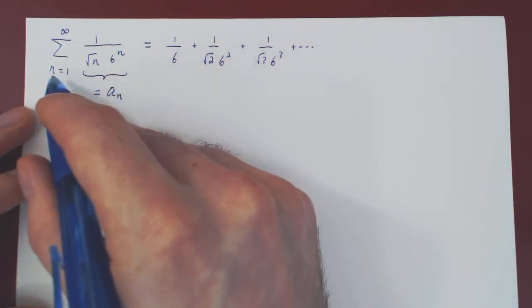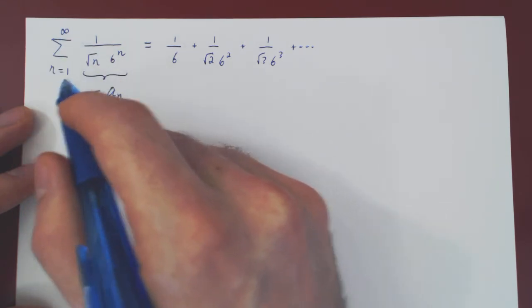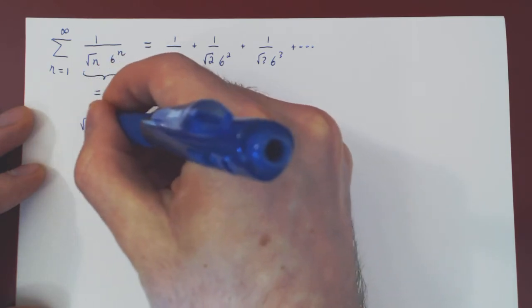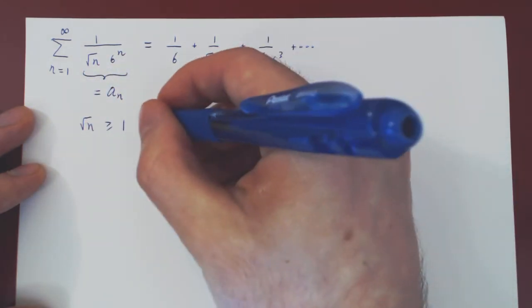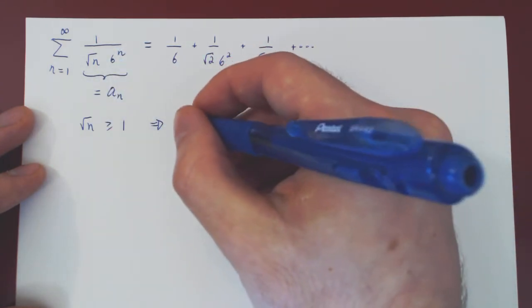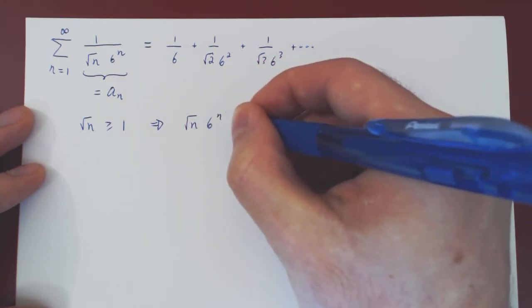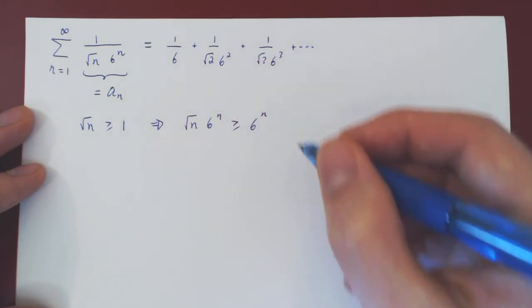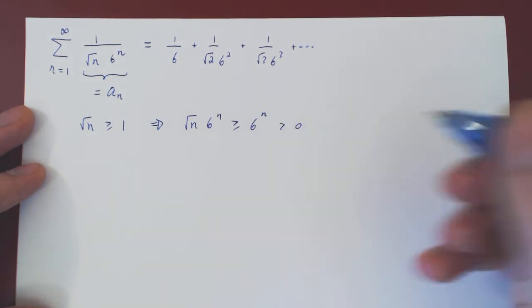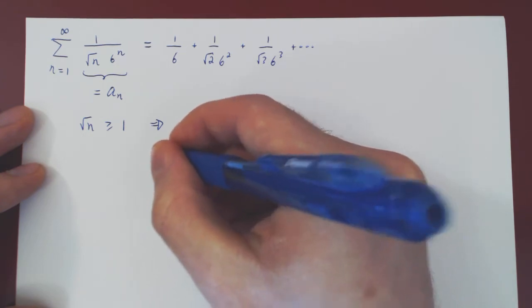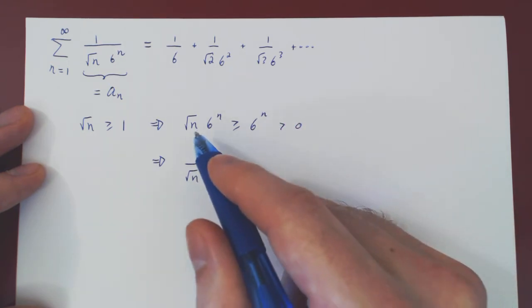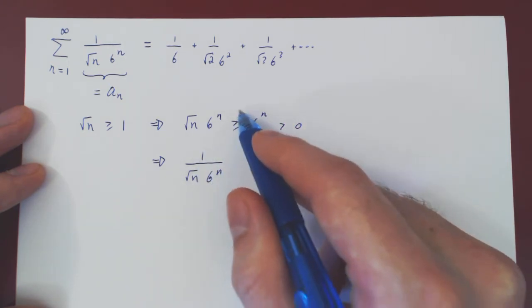So, let's see. n begins at 1 up to infinity, so clearly, root of n is larger than or equal to 1. Then, we can multiply on both sides by 6 to the n as it is positive. So, root of n times 6 to the n is at least as big as 6 to the n. This is strictly positive, so we can invert both terms. Therefore, 1 over root of n times 6 to the n, and when of course you invert both terms, you have to reverse the inequality.